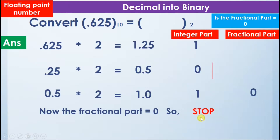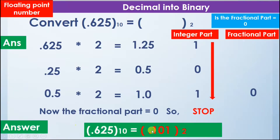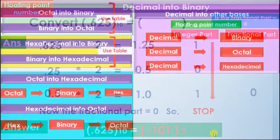We calculate the answer by going from top to bottom of the integer part. In this way, the answer is 0.101. The decimal point maintains its position on the leftmost side of the number, giving us 0.101. So the number 0.625 in decimal is equal to 0.101 in binary. This is how we convert decimal into binary using floating point numbers.